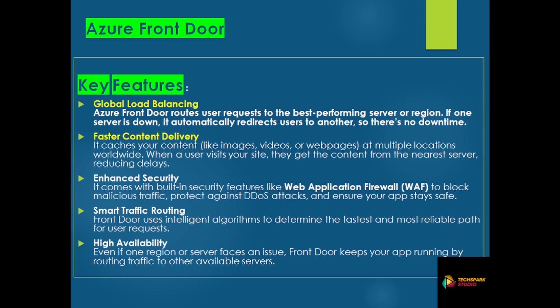With Azure Front Door we can improve user experience — the app can be accessed faster, with better reliability. In terms of key features: global load balancing — Azure Front Door routes user requests to the best performing servers or regions. If one server is down, it automatically redirects users to another, so there is no downtime.